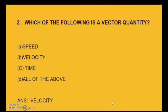Next question: which of the following is a vector quantity? Options are speed, velocity, time, all of the above. Answer is velocity.